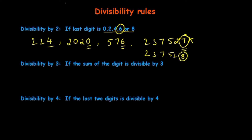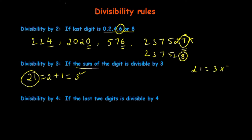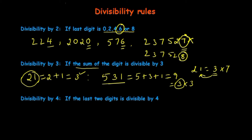The next one: divisibility by 3. The sum of the digits — this is the very important point — if the sum of the digits is divisible by 3, then the whole number is divisible by 3. For example, 21: 2 plus 1 equals 3, and 3 is divisible by 3, so 21 is divisible by 3 (21 = 3 × 7). Another example: 531 — 5 plus 3 plus 1 equals 9, which is 3 × 3, so 531 is divisible by 3. Also 2025: 2 plus 0 plus 2 plus 5 equals 9, which is divisible by 3, so 2025 is divisible by 3.